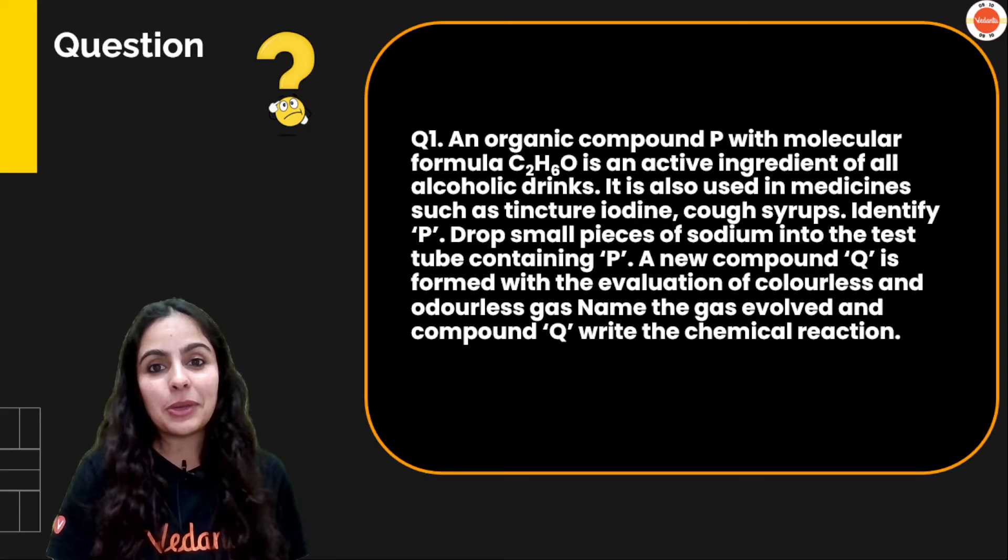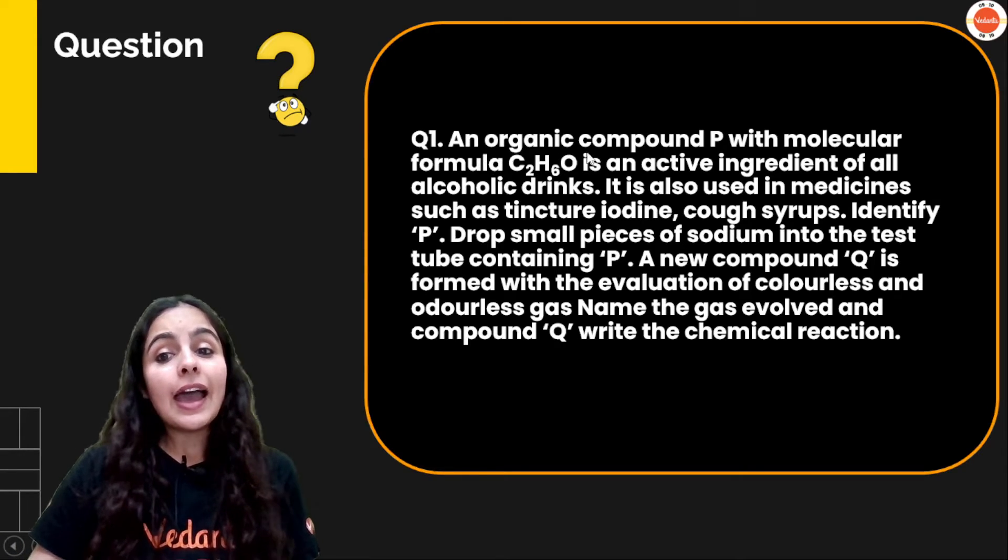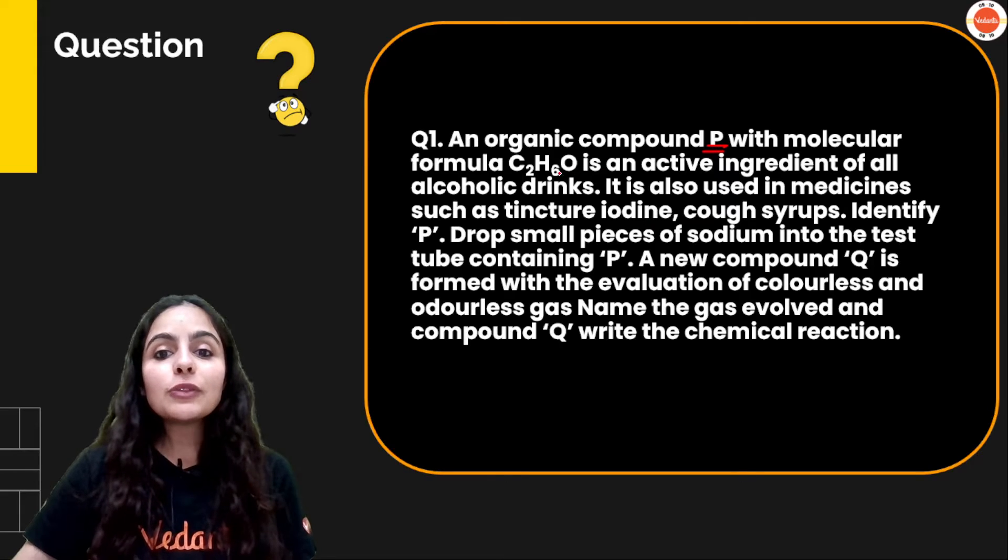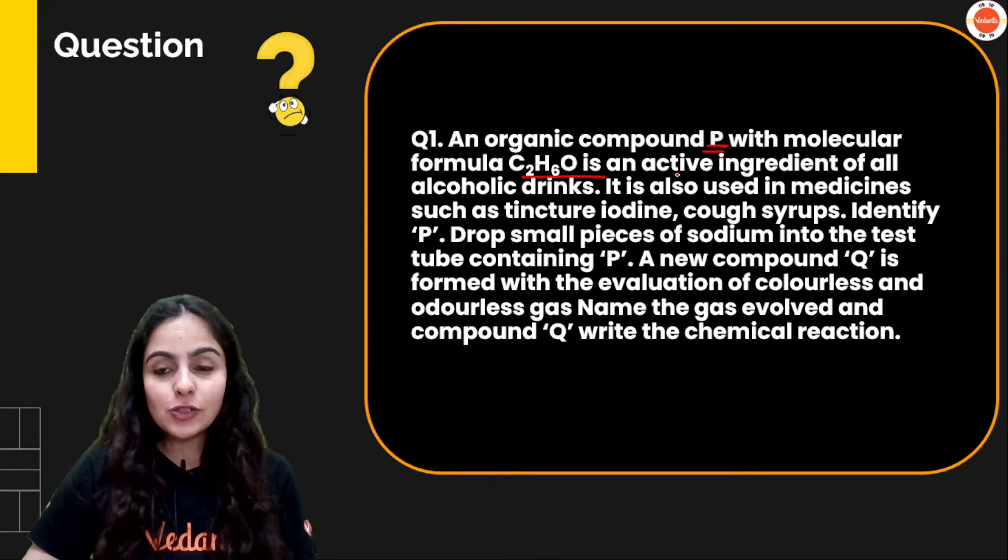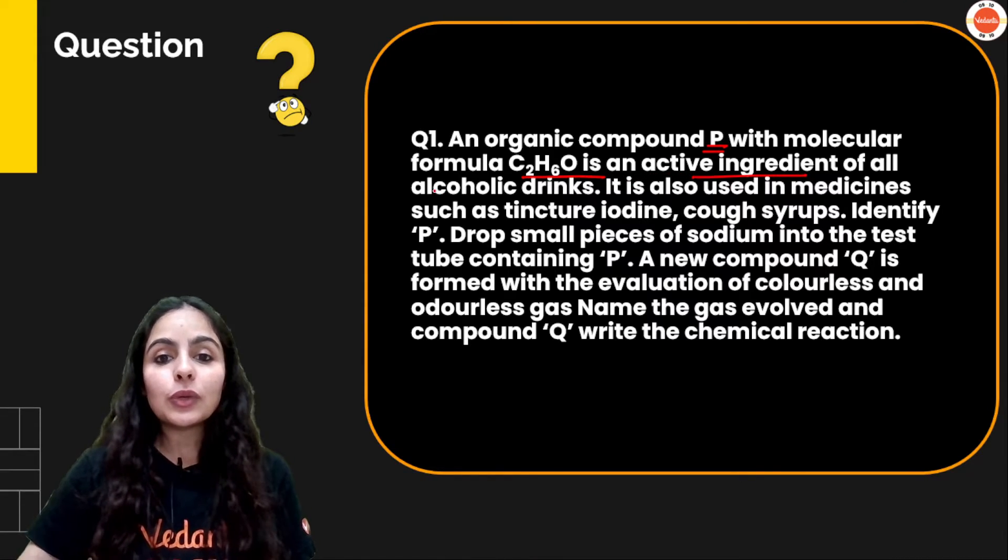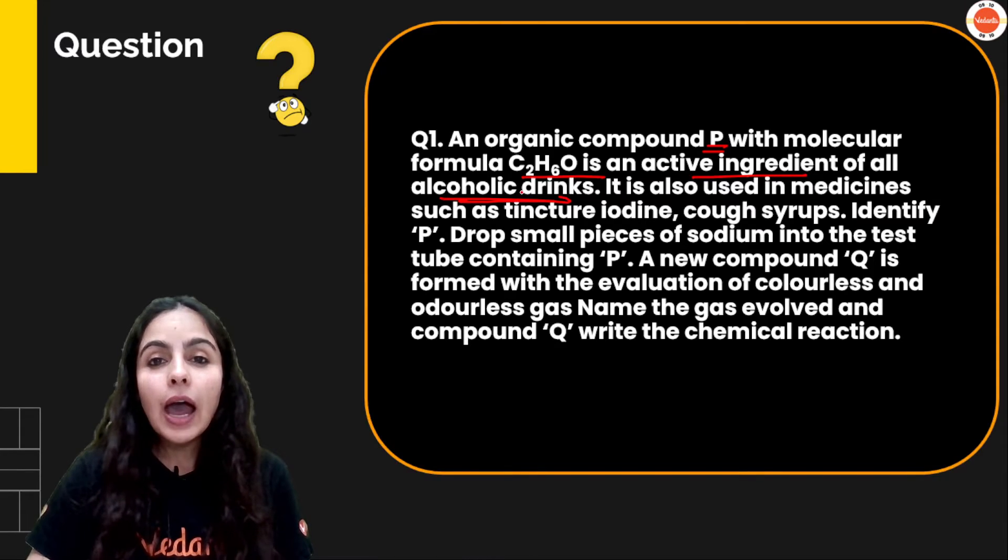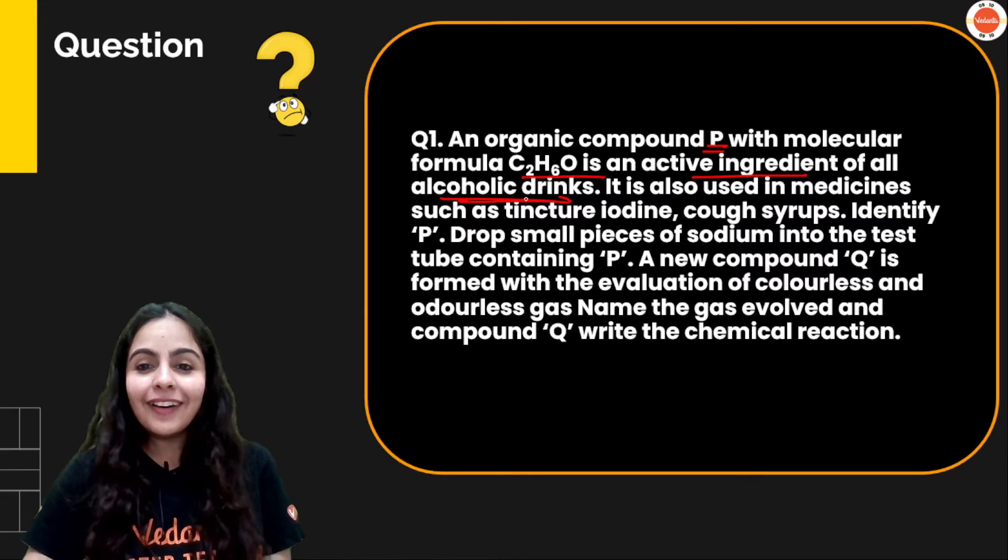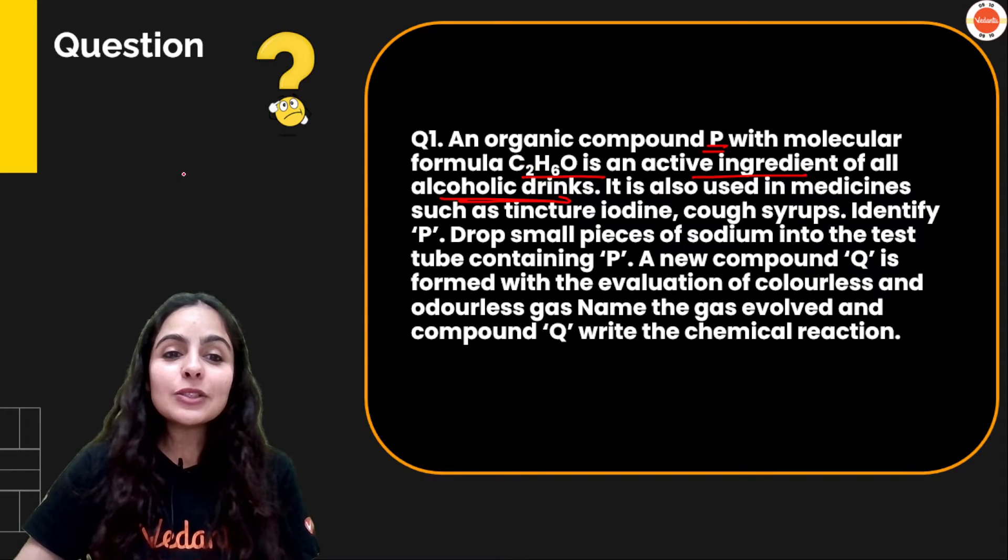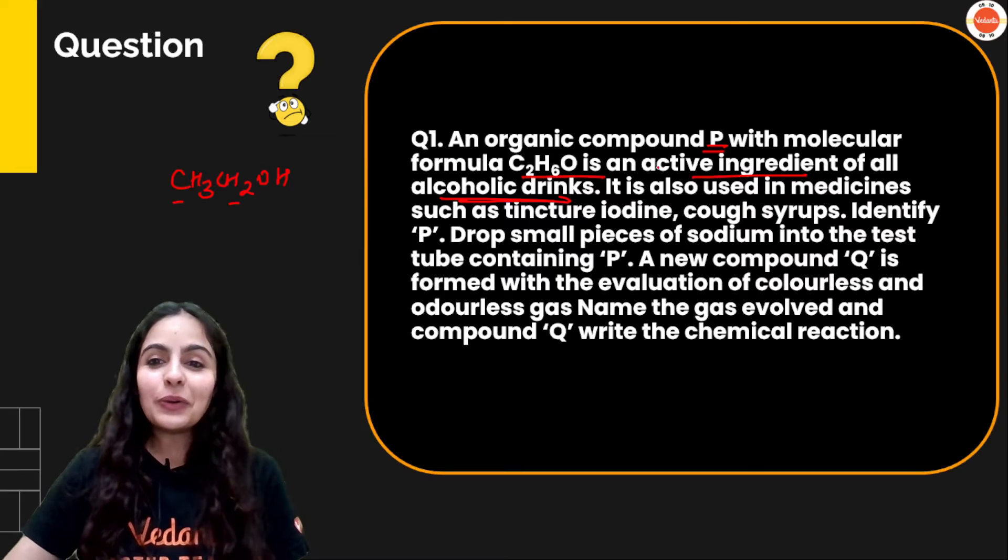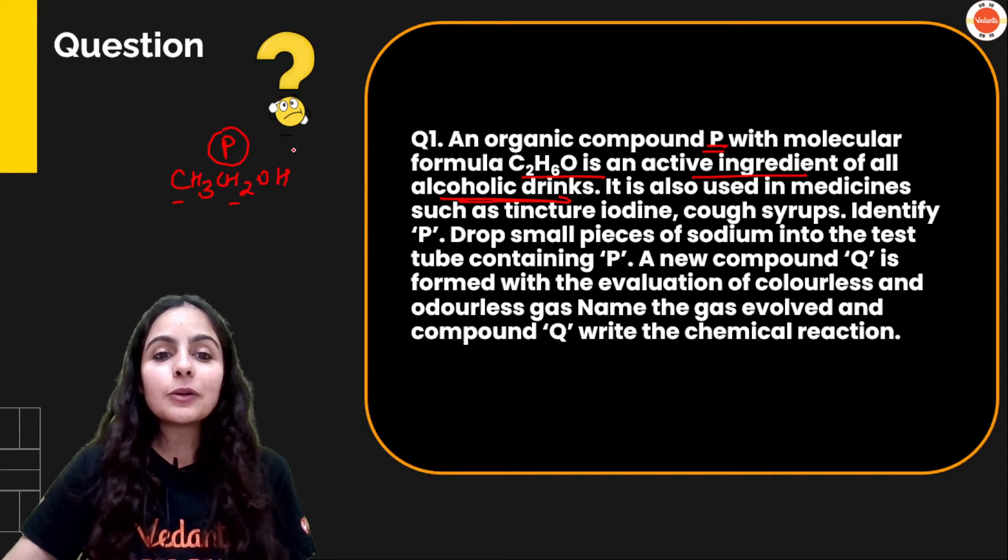Let's start with the very first question. Question says an organic compound P with molecular formula C2H6O is an active ingredient of alcoholic drinks. Alcoholic drinks ka active ingredient kone hoga? Alcohol. So C2H6 kya lagda hai? CH3CH2OH. This is your organic compound P, whose name is ethanol.